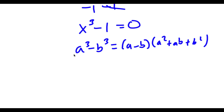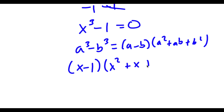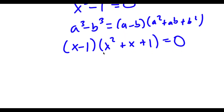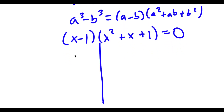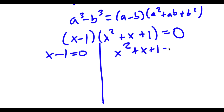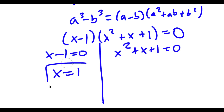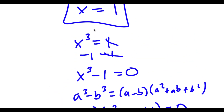So in this case, this is going to equal (x minus 1)(x² plus x plus 1), which is equal to 0. And this gives me two equations: x minus 1 equals 0, and x² plus x plus 1 equals 0. For x minus 1 equals 0, we get x equals 1, which we already got before.